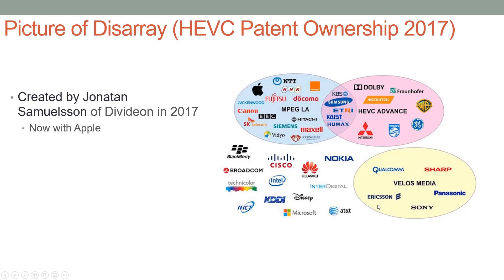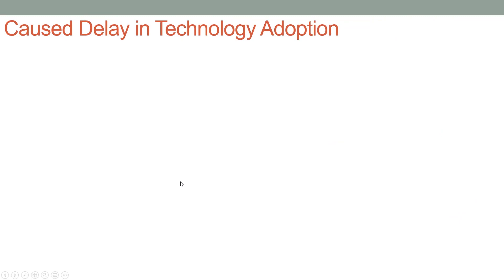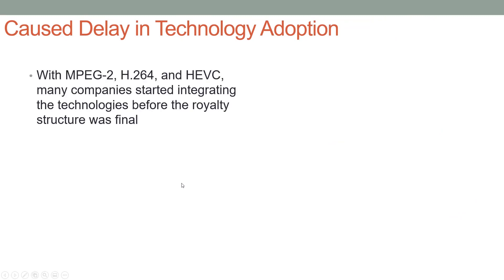This is a famous picture created by Jonathan Samuelson of Davidion in 2017 — now he's with Apple. It shows the three pools with some companies in both and substantial companies outside of any pool. This made HEVC very expensive and also very risky to license because you had three pools to deal with plus companies who didn't state their intentions regarding royalties, and that caused a delay in technology adoption.